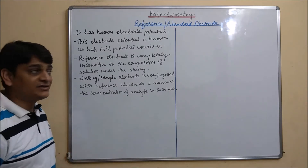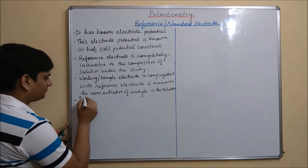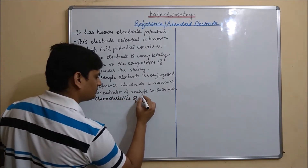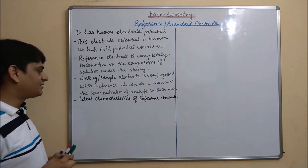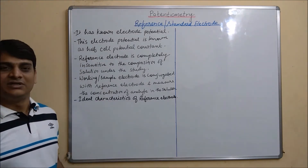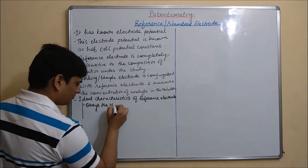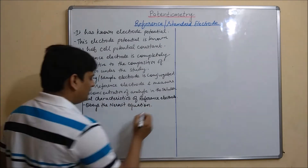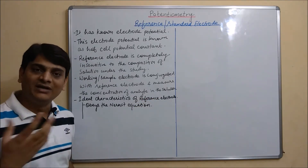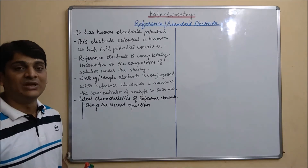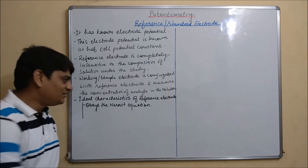Now coming to the ideal characteristics of the reference or standard electrode. The first ideal characteristic is that it obeys the Nernst equation. I have already discussed the Nernst equation in my previous video, and the link is given here, so you can watch that video for the Nernst equation.